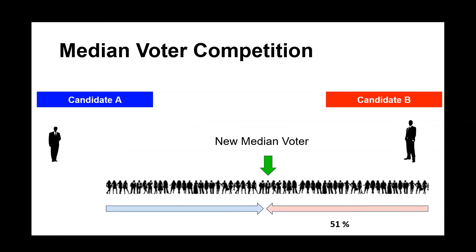Because fewer people are now eligible to vote, and those have been targeted at supporters for candidate A, that establishes a new midpoint and therefore a new median voter that is more accessible for candidate B.